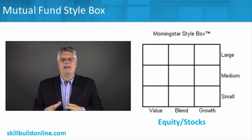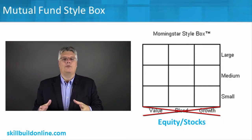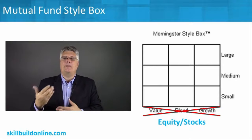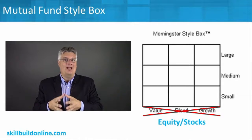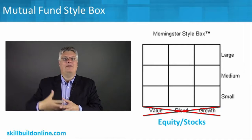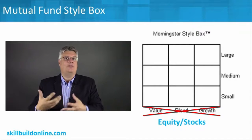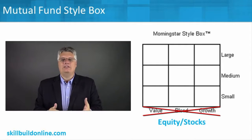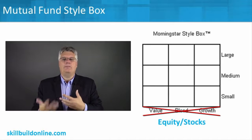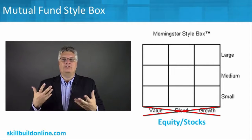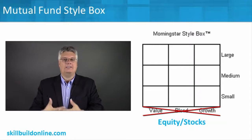Along the bottom, it has things like value, blend, and growth. Growth stocks are things that you want to outperform the market from a capital appreciation standpoint — you want to buy low, have the stock price grow rapidly, faster than the industry, the sector, and the greater market. You want these to be high flyers, so those are growth stocks. Value stocks tend to be more of the well-established stocks, the players who might be paying more dividends.